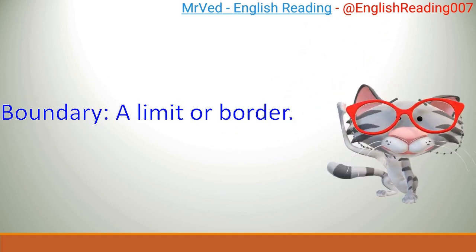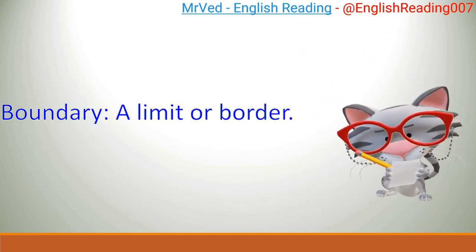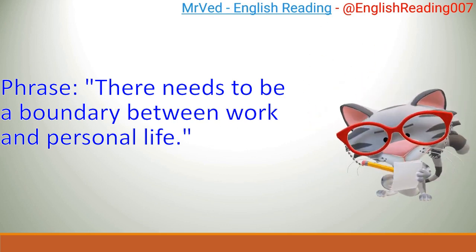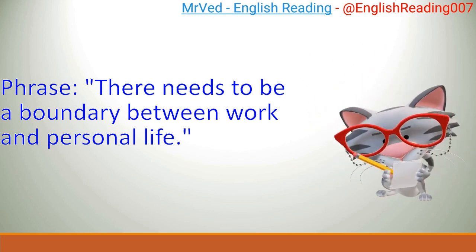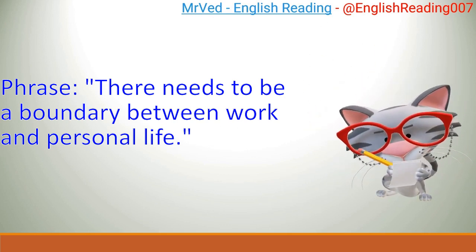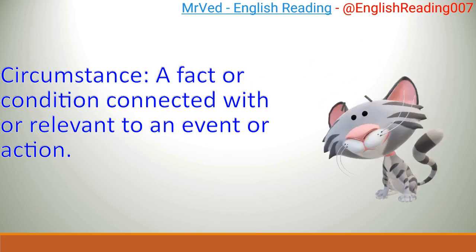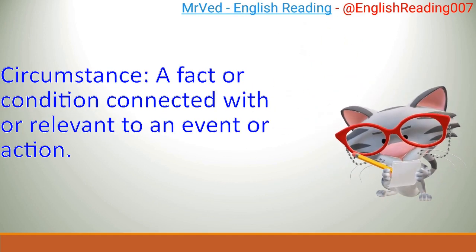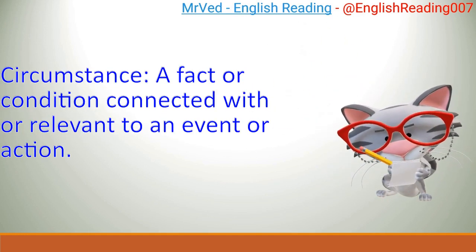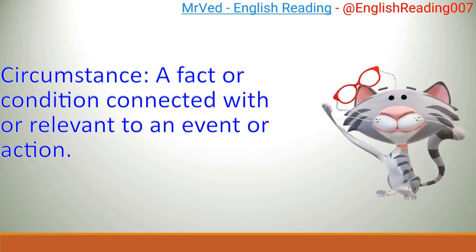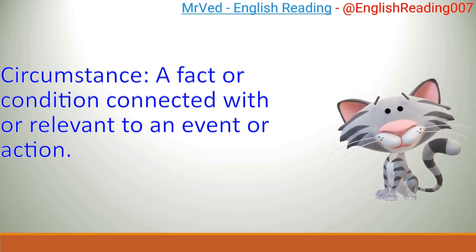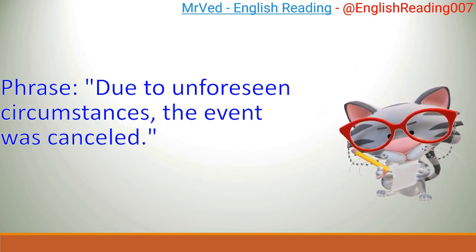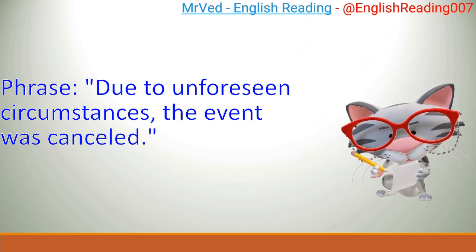Boundary: a limit or border. Example: There needs to be a boundary between work and personal life. Circumstance: a fact or condition connected with or relevant to an event or action. Example: Due to unforeseen circumstances, the event was cancelled.